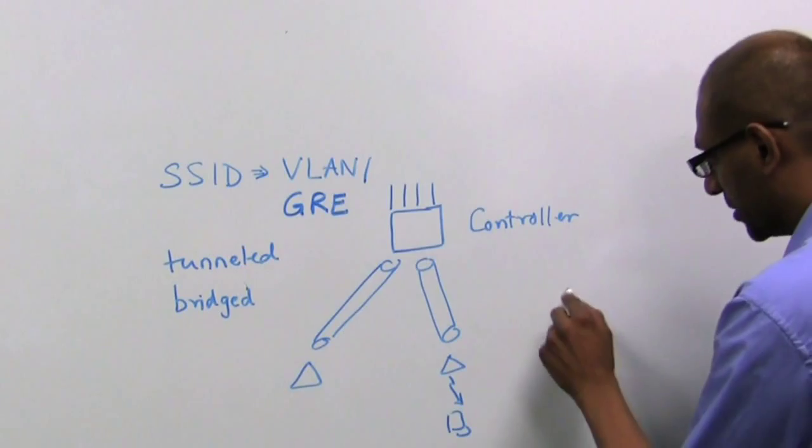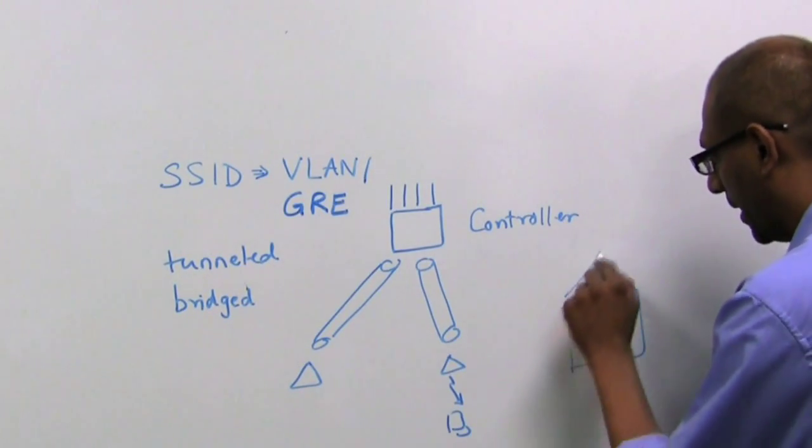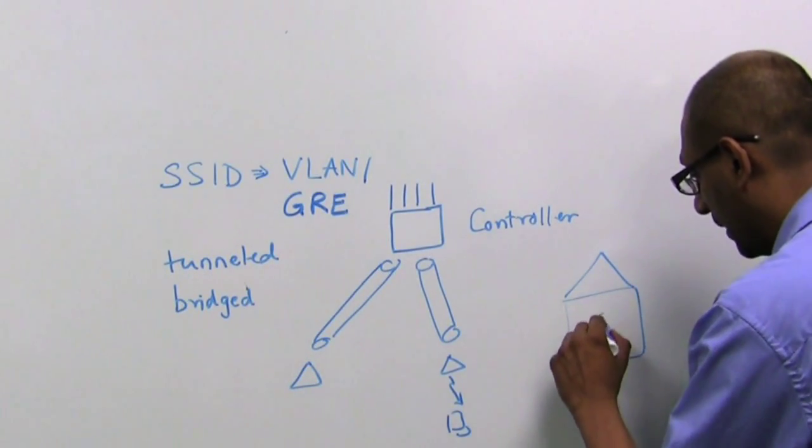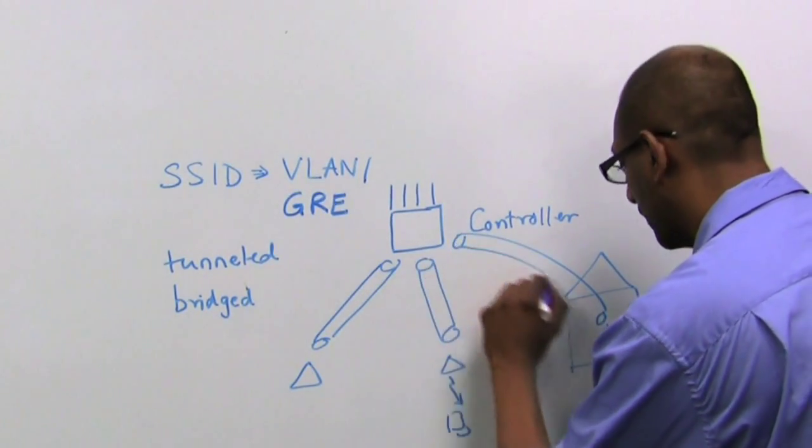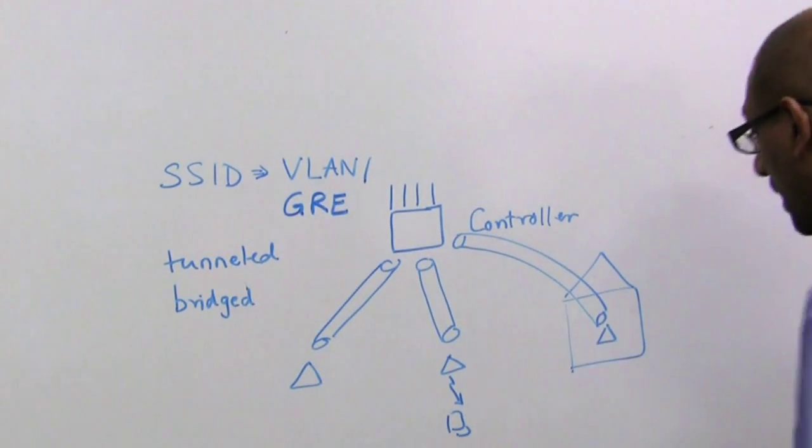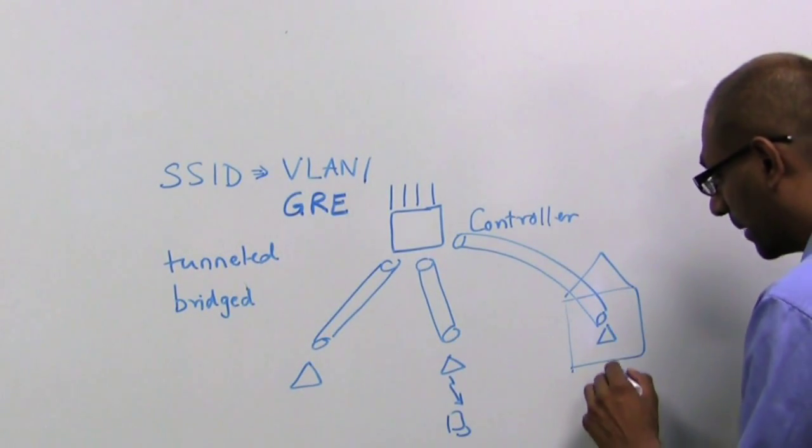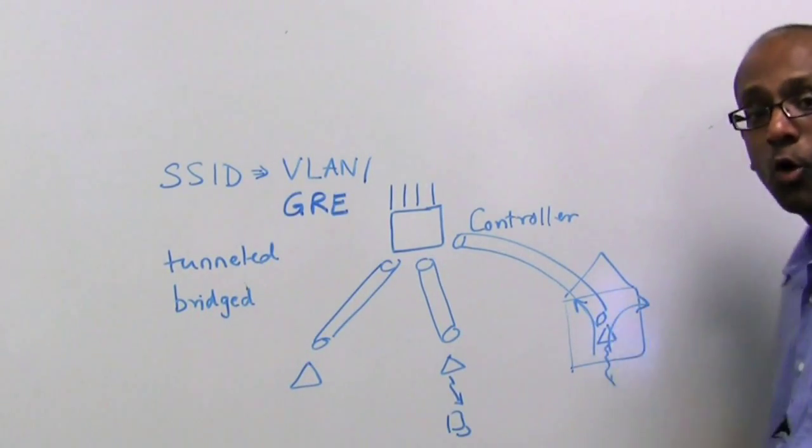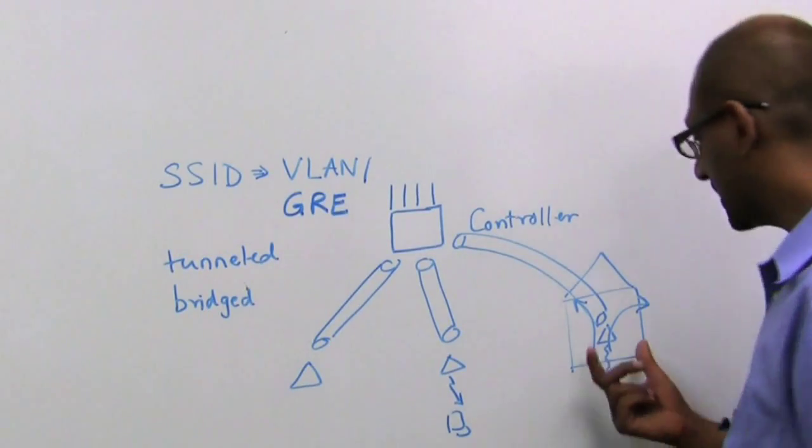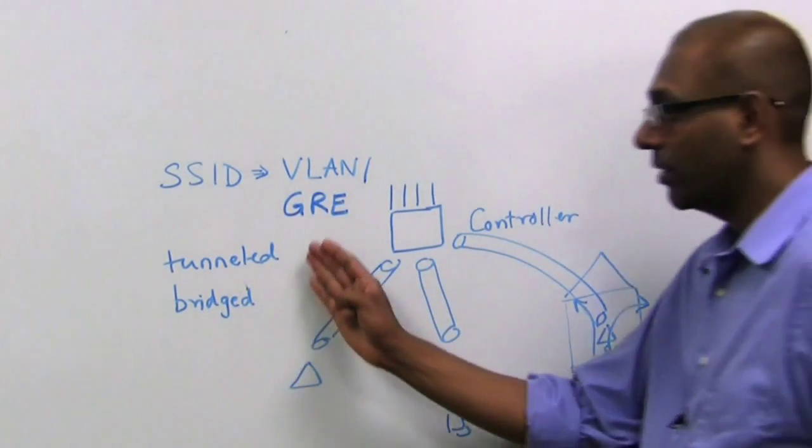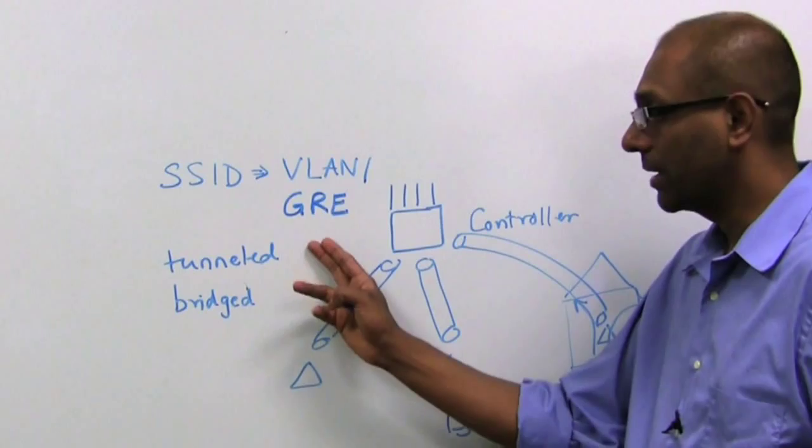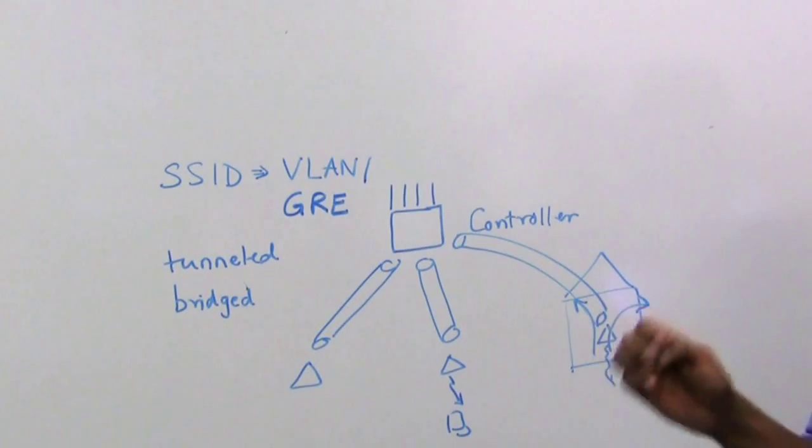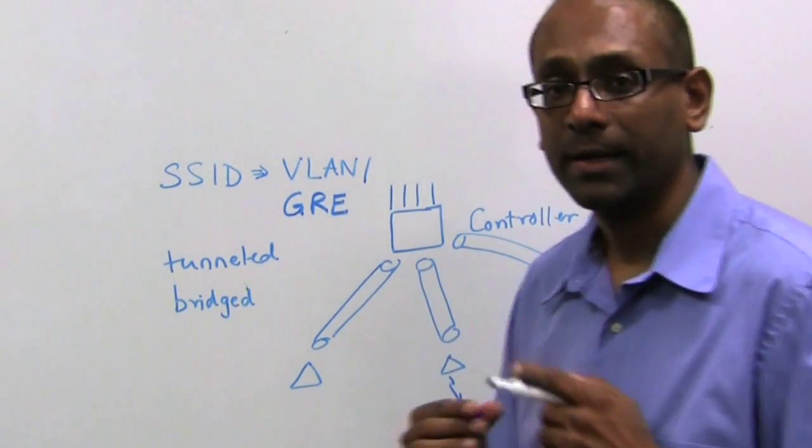However, you might have situations where you have a faraway AP or let us say a home access point that might also have some tunnel traffic, but maybe it has multiple SSIDs where some traffic needs to be tunneled and other traffic is locally bridged. So on a per-SSID basis, you could either do tunneling or bridging. Tunneling is default, but bridging allows the option of having a local drop-off corresponding to that SSID.